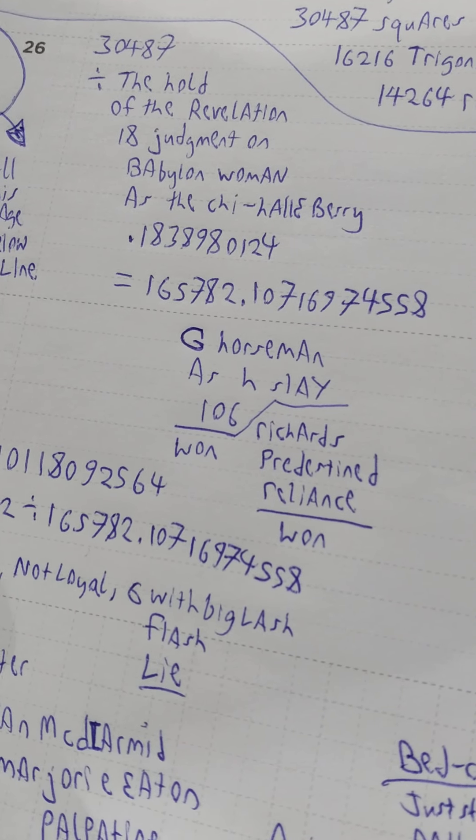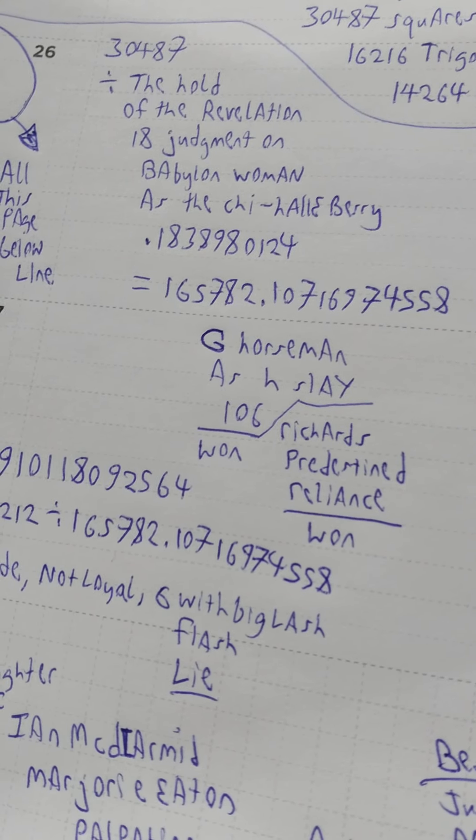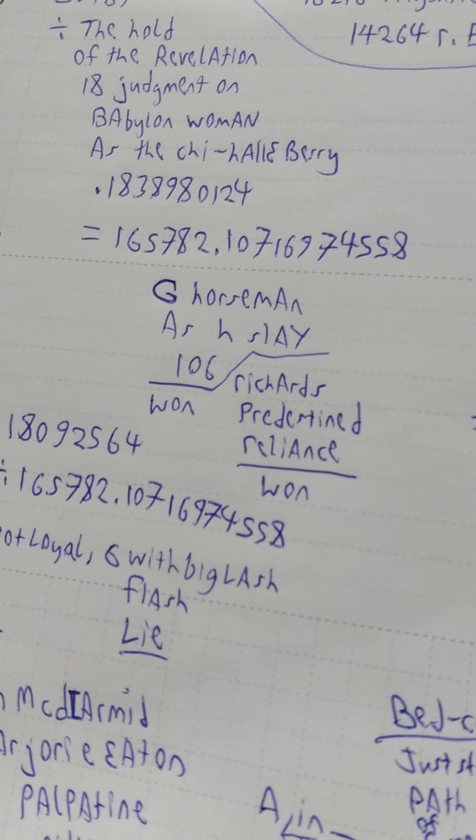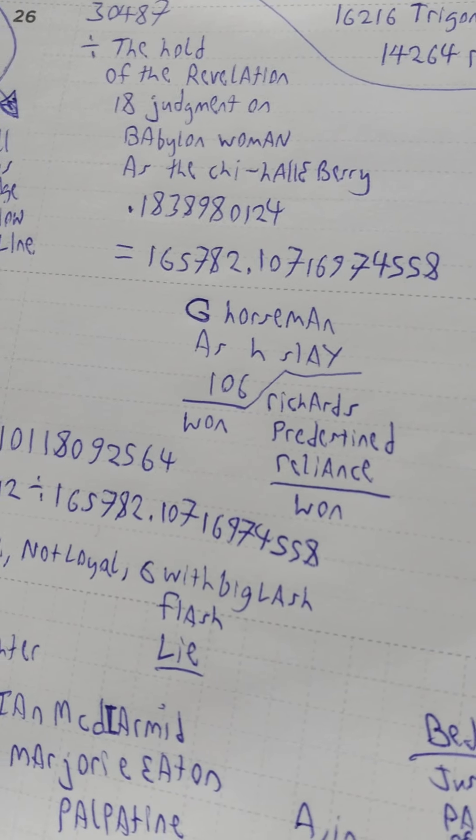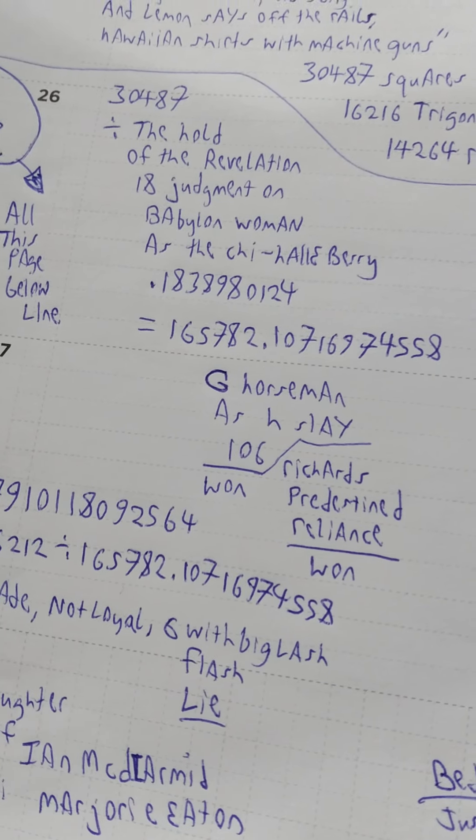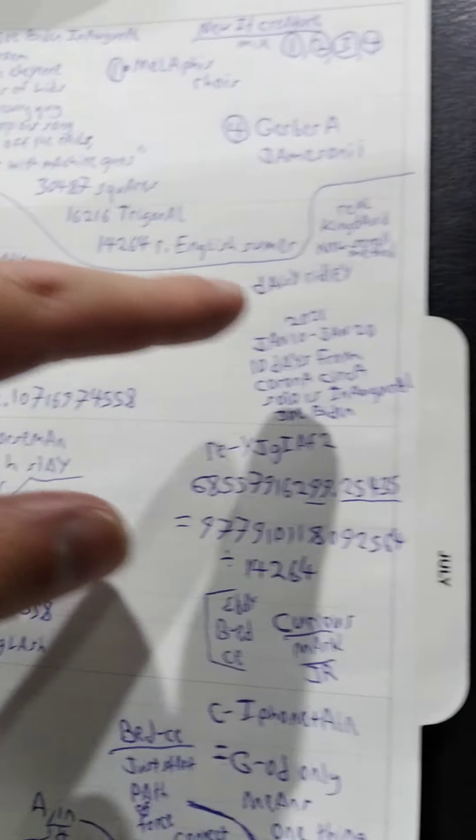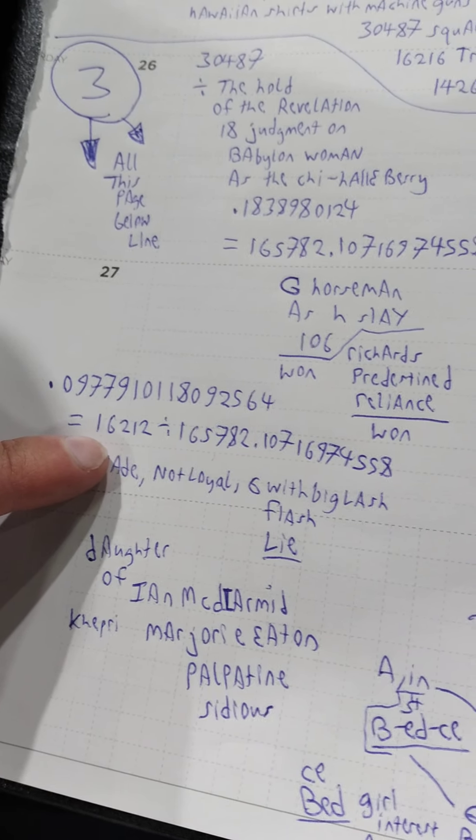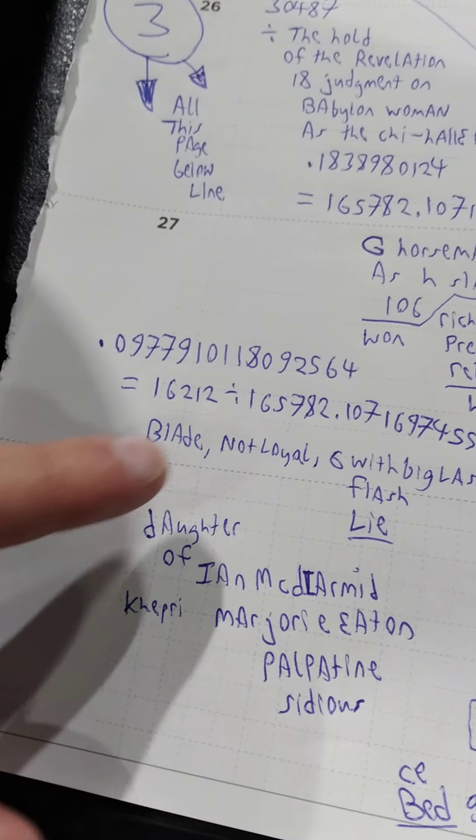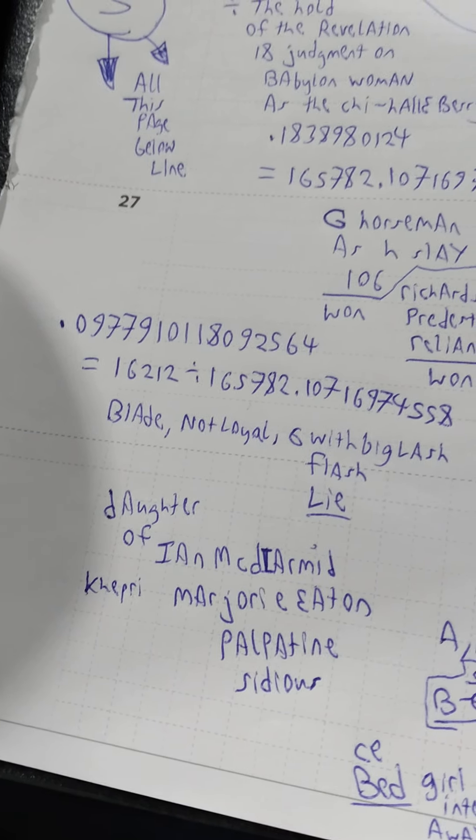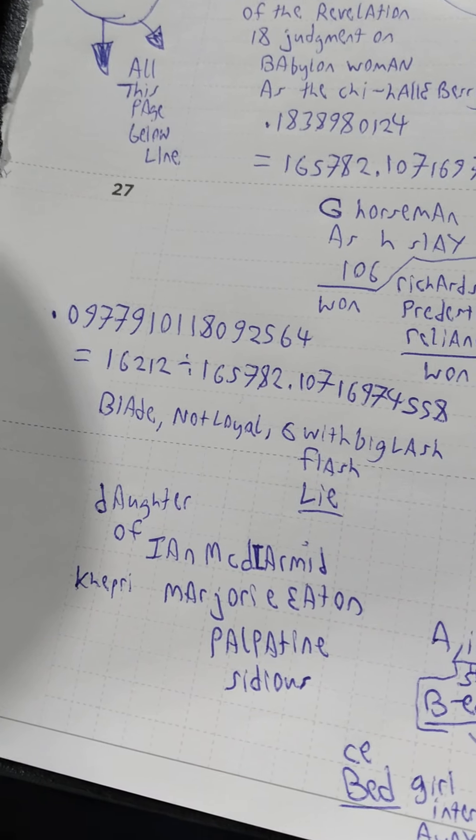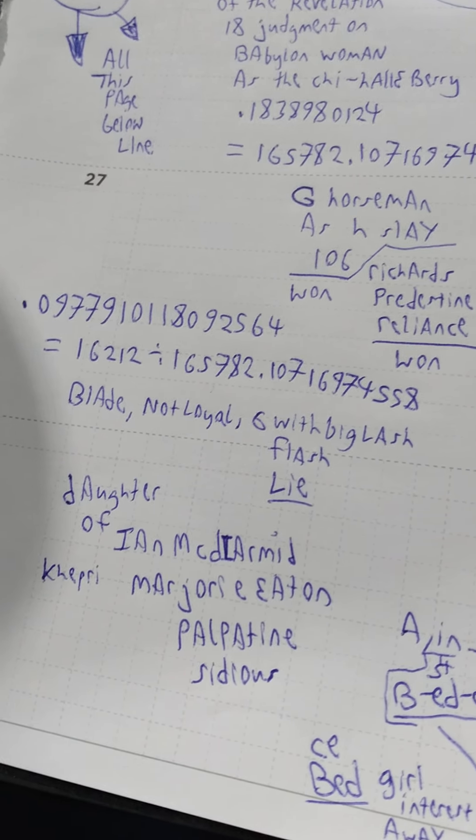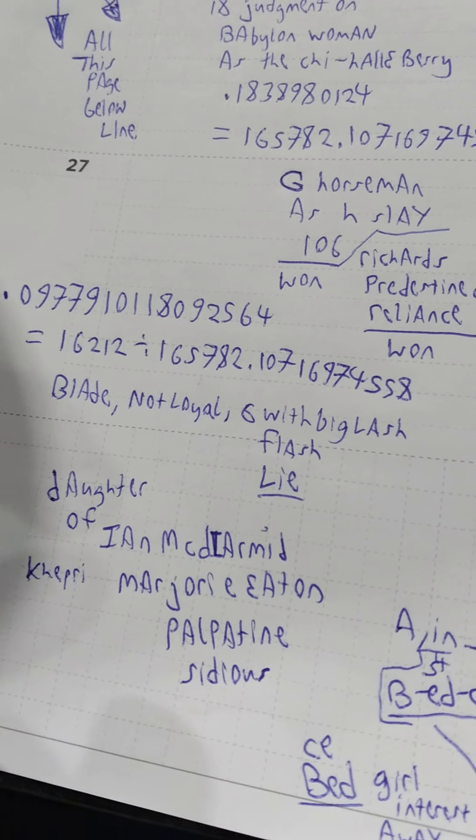So I got G Horseman as H Slay. H is like the Han or it can be as like you went down on your knee and like somebody died or something like it's Slay, like 106 is how he shows up. So Richard's predestined reliance one and that 106 one. So we've got that. And then 16212 divided by that number. And then you start to get blade, as like bleed, be laid on the burdens, like a Joe Ash, like the burdens laid upon him that he's running that somehow. Then not loyal would be that reference there of the, it would be opposite of the Eve character. And then six with big lash.